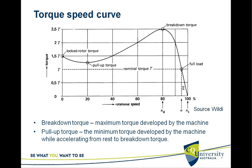At the beginning — the locked rotor situation at zero speed — the locked rotor torque is about 1.5 times T, where T is the nominal or rated torque. The rated torque is what the machine is designed to operate at.